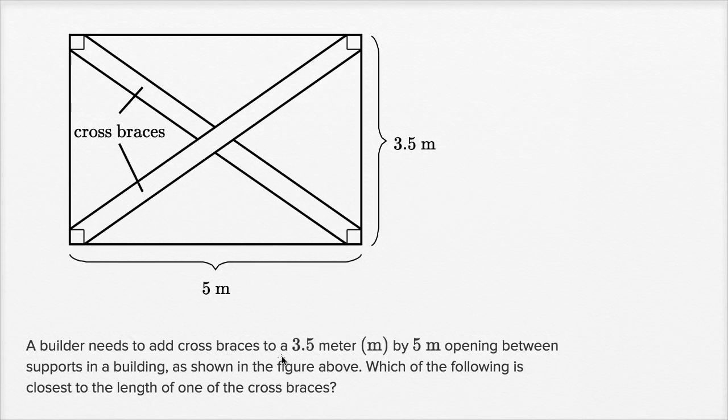A builder needs to add cross braces to a 3.5 meter by five meter opening between supports in a building, as shown in the figure above.